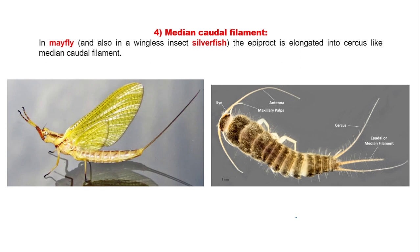The median caudal filament is present in mayfly and silverfish. In these insects, the epiproct is elongated into a cerci-like structure known as the median caudal filament.